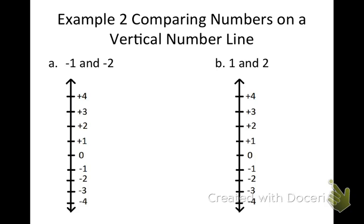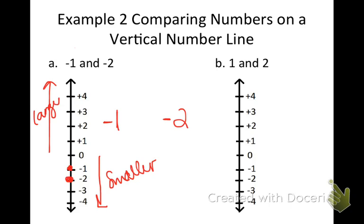Example 2: comparing numbers on a vertical number line. I want to compare negative one and negative two. First I'm just going to put dots at negative one and negative two. As we go deeper down, our numbers are going to get smaller, and as you go up, your numbers are going to get larger. So negative two is smaller than negative one. I always point at the smaller number, so I'm going to point at the negative two.